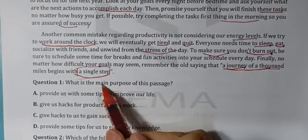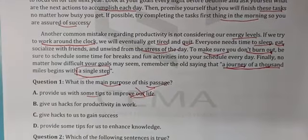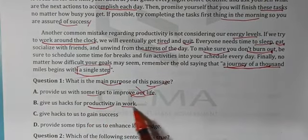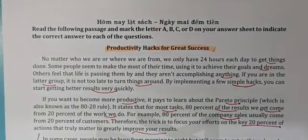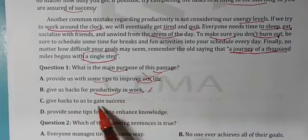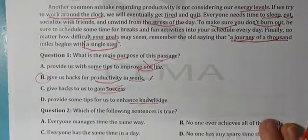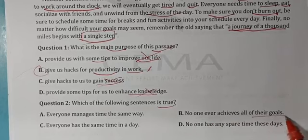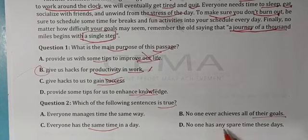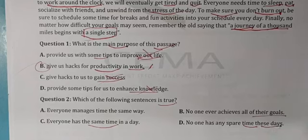Mục đích chính của bài đọc số 2 là gì? Không phải cải thiện cuộc sống chung chung, mà là đưa ra những tips để có tính hiệu quả hơn trong công việc. Vì tiêu đề là 'Productivity Hacks for Success' - tính hiệu quả dẫn đến thành công. Đáp án là câu B: cung cấp tips để hiệu quả hơn trong công việc.